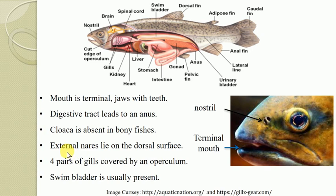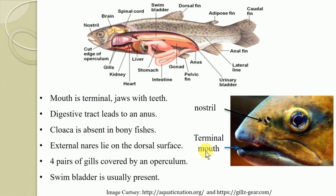The external nares lie on the dorsal surface of the snout — the snout is the proximal terminal portion of the body. In the case of lungfishes, internal nares are also present, joined with the external nares, which allows breathing of air. Four pairs of gills are present on bony gill arches, and these gill arches are always covered by the operculum, which is always present in Osteichthyes.